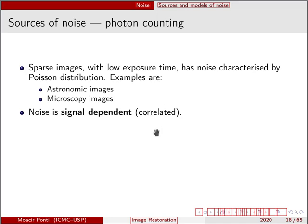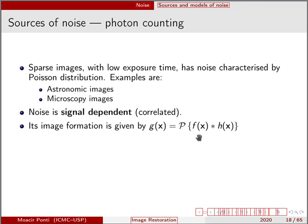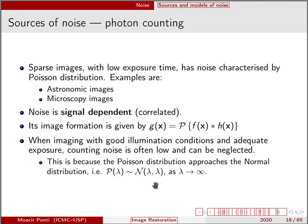Sparse images with low exposure time have noise characterized by Poisson distribution. Examples are astronomic images and microscopic images. In the case of photon counting, the noise is signal dependent, correlated with the signal, and the image formation is given by F convoluted with H with a Poisson process on top. But when images are acquired with good illumination conditions or adequate exposure and not in an extreme focal scenario, this counting noise is often low and can be neglected or approximated using a normal distribution. As the parameter lambda of the Poisson distribution gets higher, we can approximate it using a normal distribution with mean and standard deviation equal to lambda.